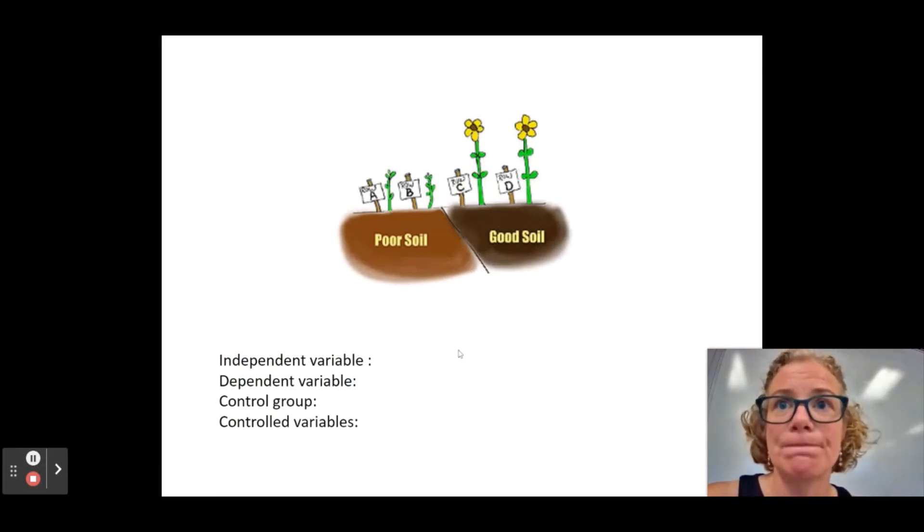All right. Independent variable. Well, you're already kind of seeing the results in this picture. And that can be confusing for kids. They're, like, okay, is the independent variable the type of flower? Well, probably it was the type of soil was the thing that I, the scientist, was changing.